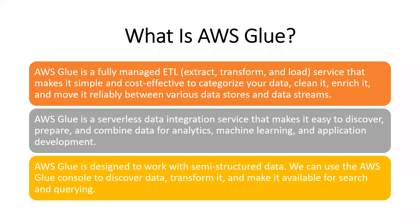What is AWS Glue? AWS Glue is a serverless data integration service that makes it easy to discover, prepare and combine data for analytics, machine learning and application development. AWS Glue provides all of the capabilities needed for data integration so that we can start analyzing our data and putting it to use in minutes instead of months. AWS Glue provides both visual and code-based interfaces to make data integration easier. We can easily find and access data using the AWS Glue Data Catalog.